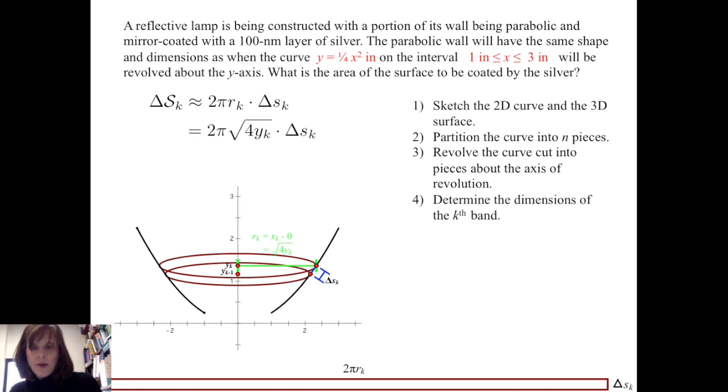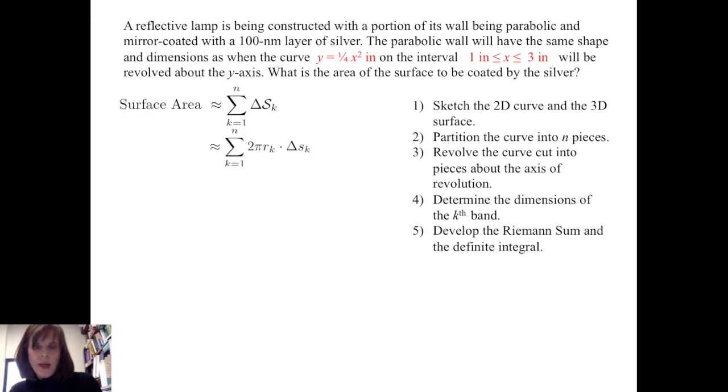I sum the areas of the bands and I get that the surface area is approximately the sum of 2 pi r sub k times delta s sub k as k goes from 1 to n. And I let the norm of the partition go to 0. And I develop the definite integral of 2 pi times the square root of 4y ds. This time, because we want my integral to be strictly in terms of y, we'll let ds be the square root of 1 plus dx dy squared dy. And I note that the limits of integration are in terms of y, y going from 1 fourth to 9 fourths.